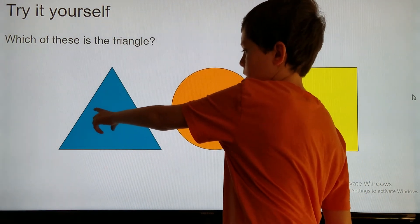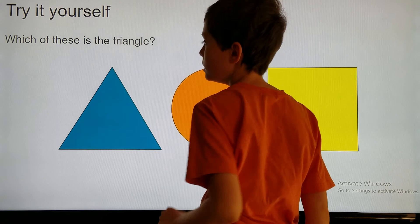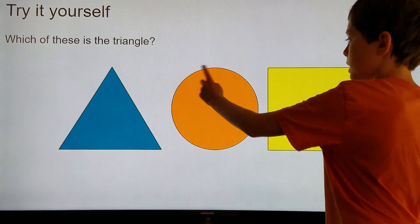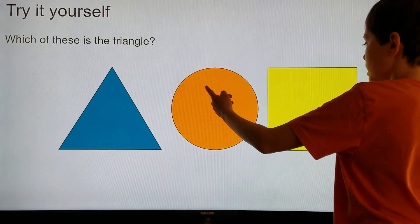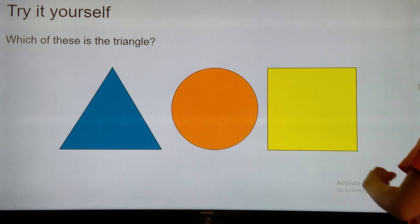This one is the triangle because it has one, two, three equal sides. This one has no sides, and this one has one, two, three, four equal sides.